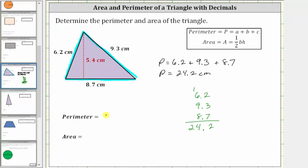So let's go ahead and record the perimeter, and now work on determining the area. The area of a triangle is equal to 1/2 base times height, where for our triangle, the base is 8.7 centimeters, and the height is 5.4 centimeters.